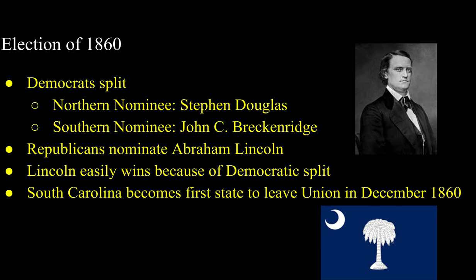The election of 1860 effectively marked the beginning of the Civil War. Democrats split between North and South, slavery supporters and anti-slavery factions. Northern Democrats nominated Senator Stephen Douglas, and Southern pro-slavery Democrats nominated John C. Breckinridge. The Republican Party, still united, nominated Abraham Lincoln, and he easily won due to the Democratic split. In response to his election, South Carolina officially became the first state to leave the Union at the end of 1860 on December 31st.